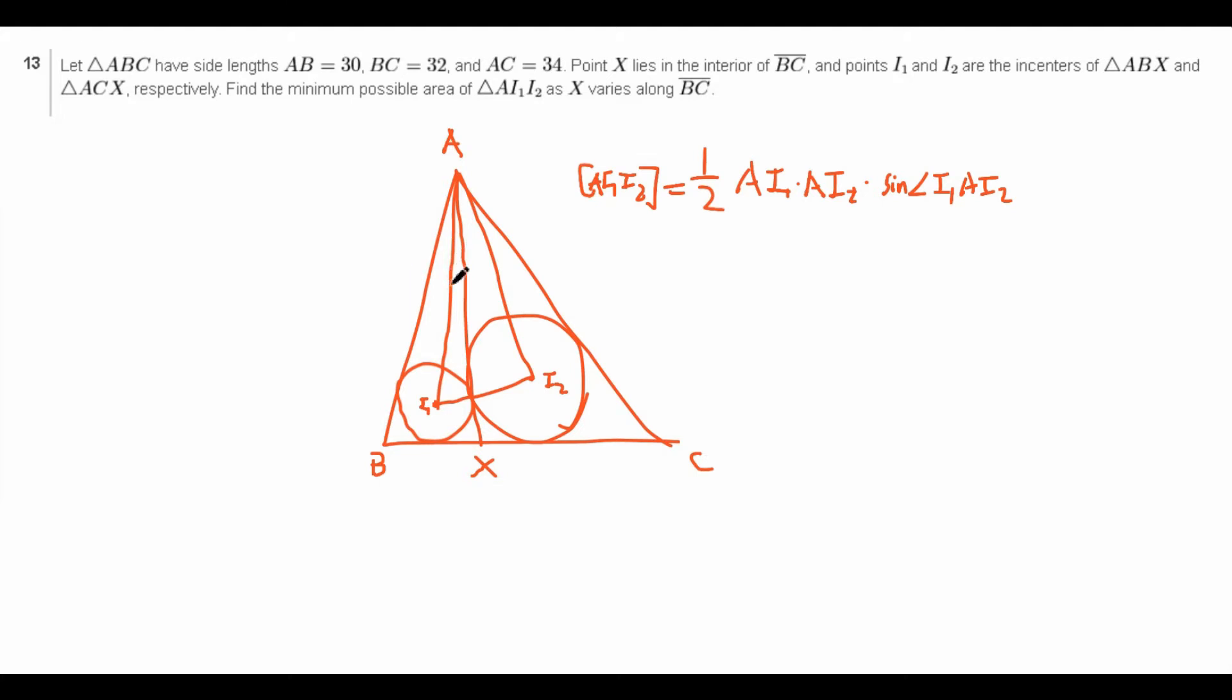So instead let's do the area of A, I1, I2 as AI1, I2 is going to equal 1 half AI1 times AI2 times the sine of angle I1, A, I2. And in particular, this area definition is especially nice for us, because what's the angle I1, A, I2?